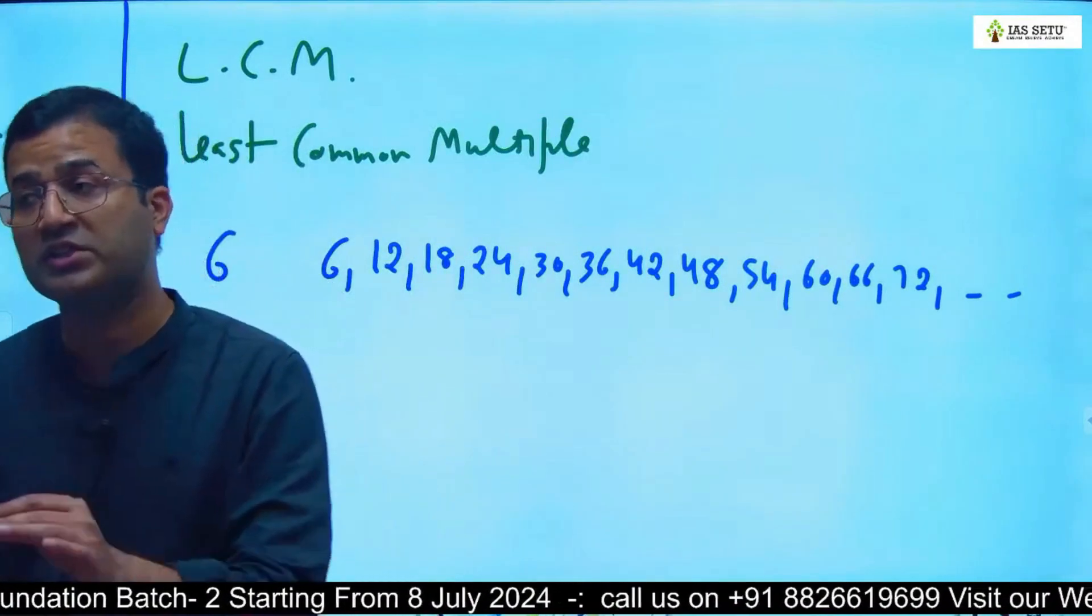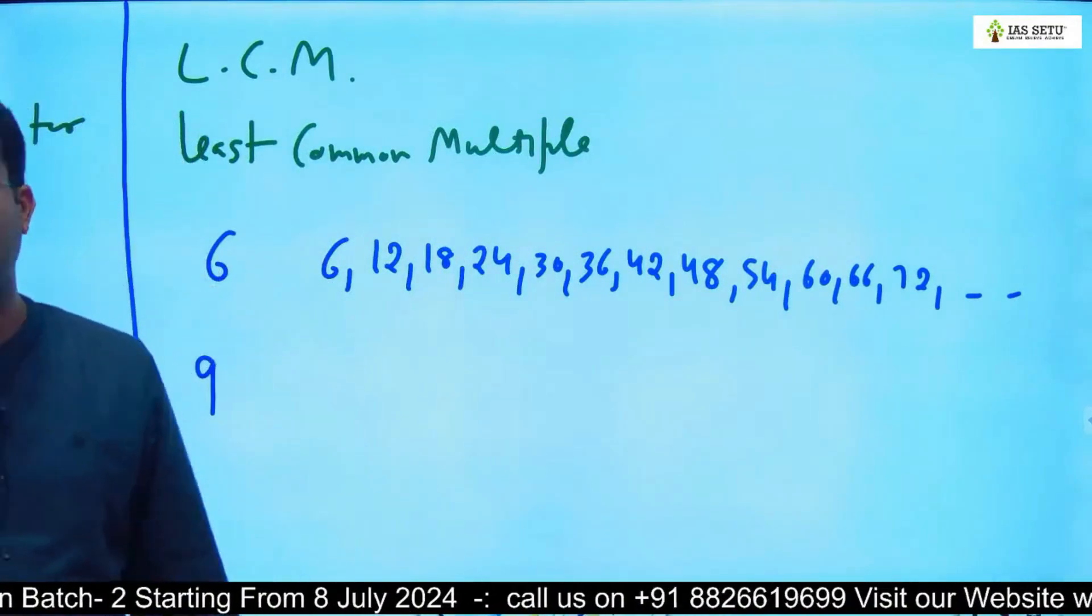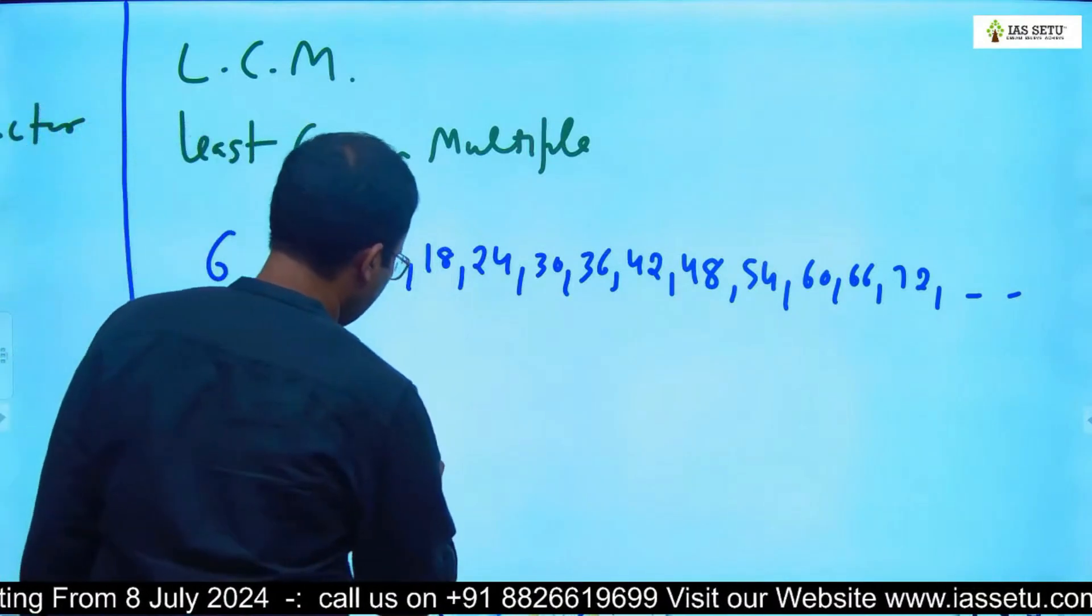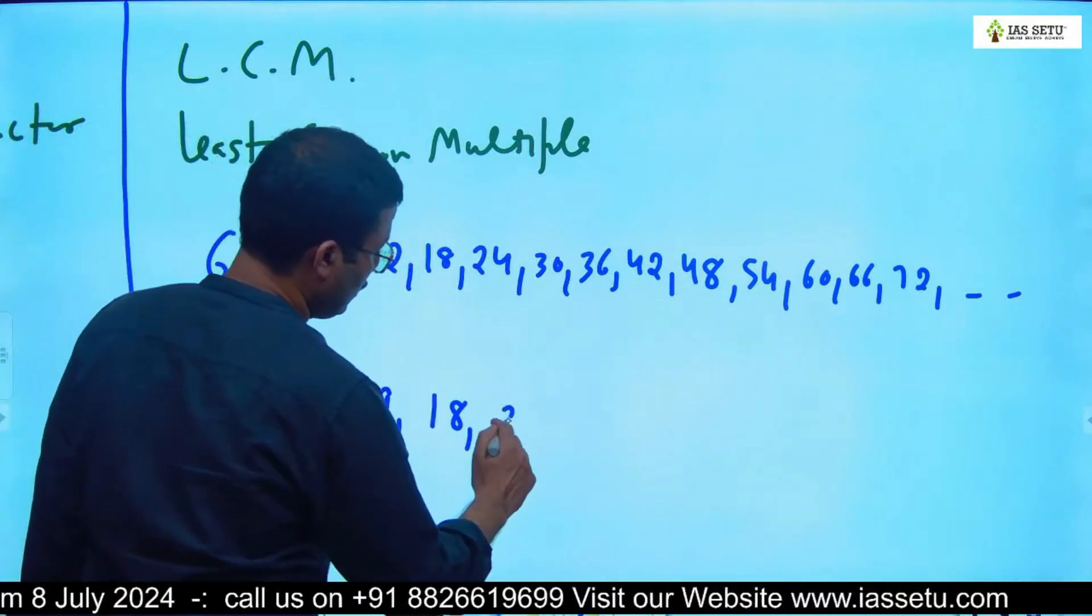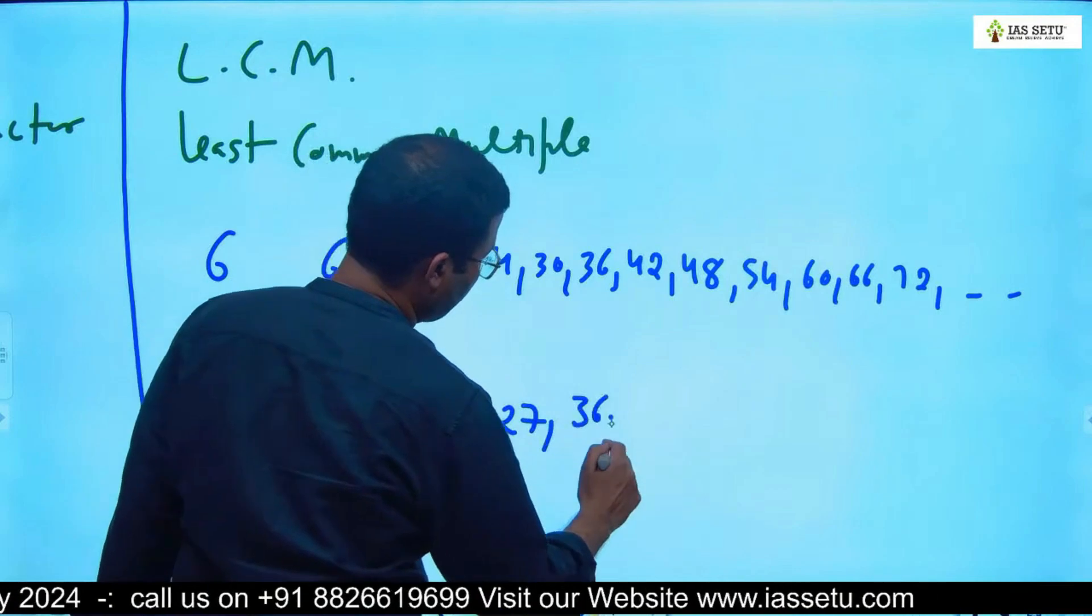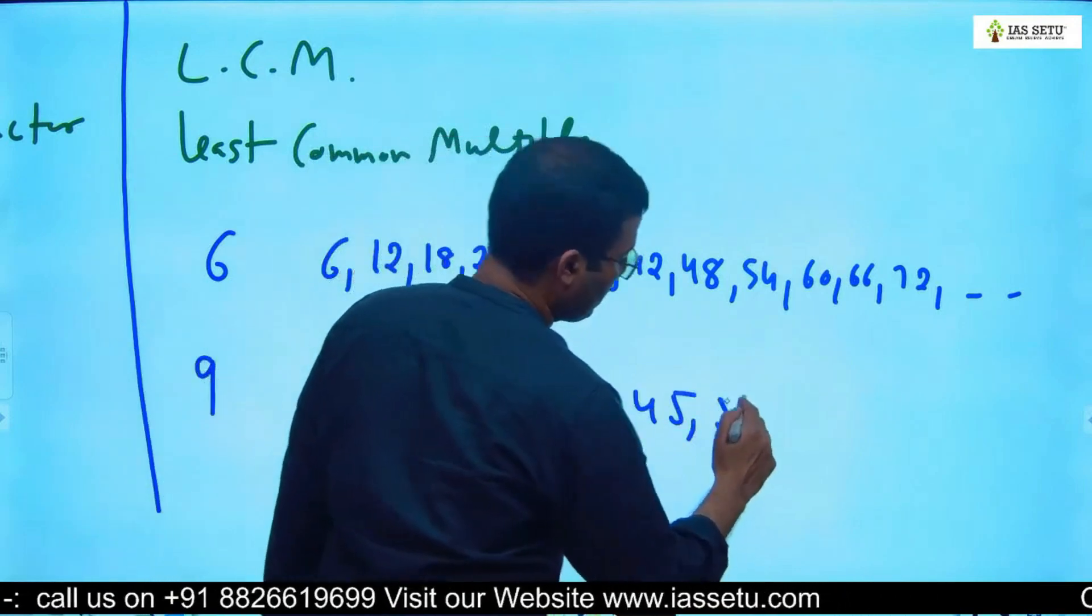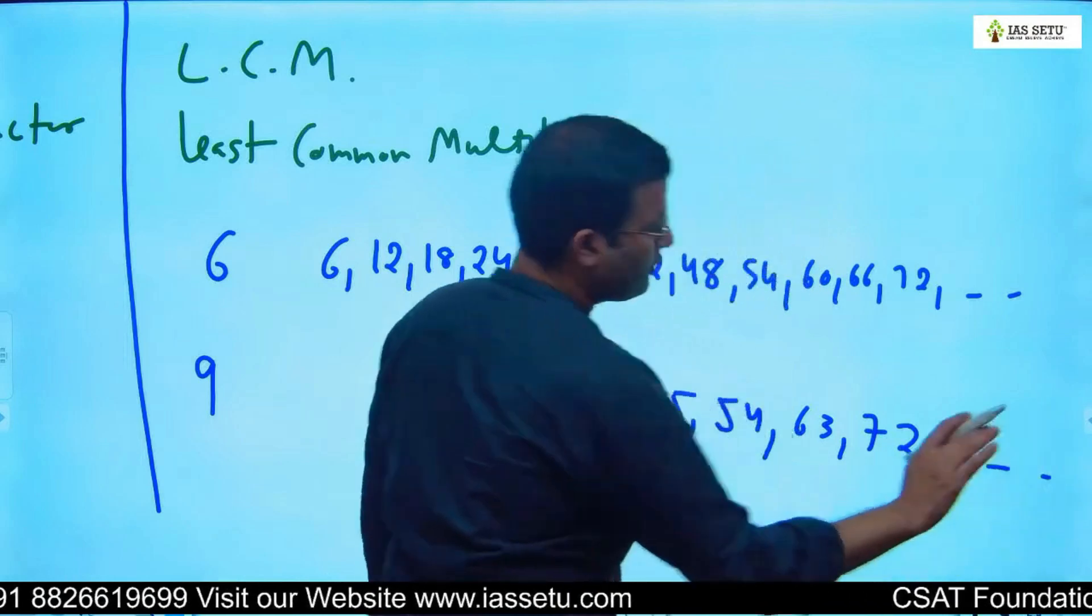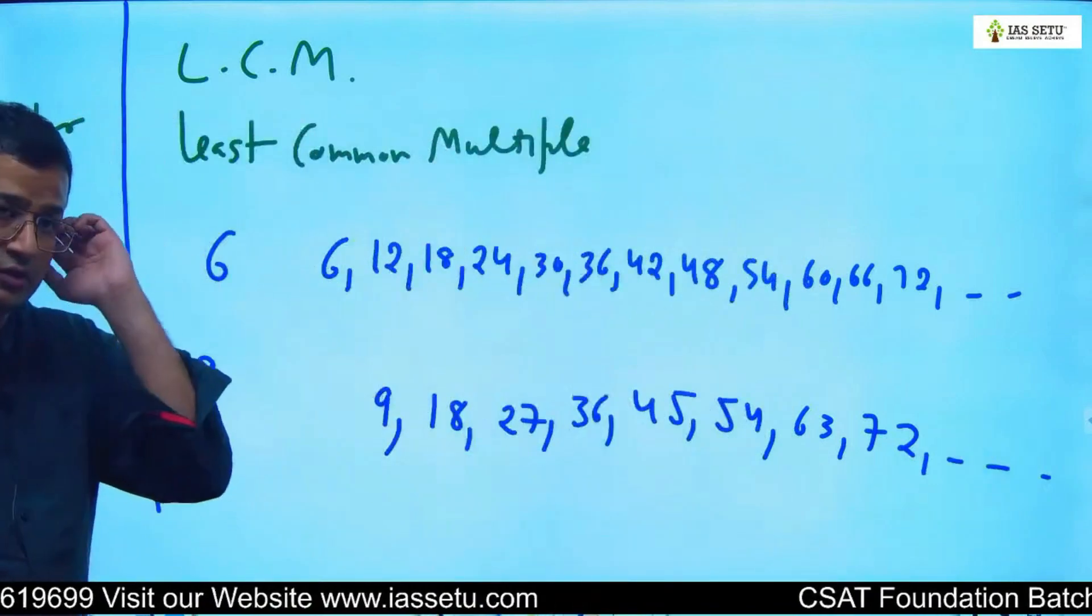Tell me how many multiples of 6? Infinite. Multiples of 9: 9, 18, 27, 36, 45, 54, 63, 72, and so on - infinite.